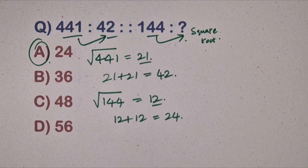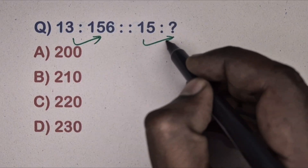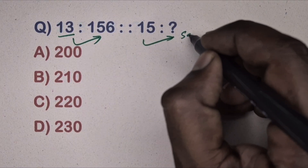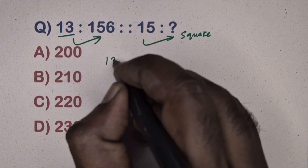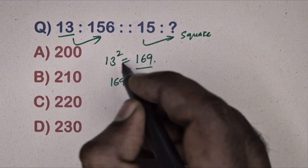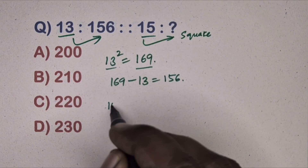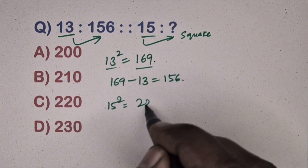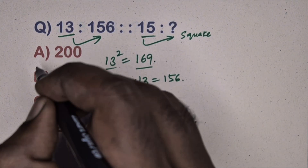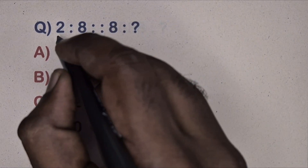Next question: 13 is related to 156, 15 is related to which number? Take 13: 13² = 169, subtract the given number 13, so 169 − 13 = 156. Same way, take 15: 15² = 225, subtract 15, so 225 − 15 = 210. Option B is the correct answer.